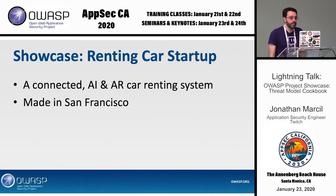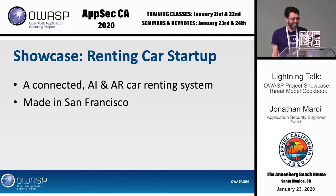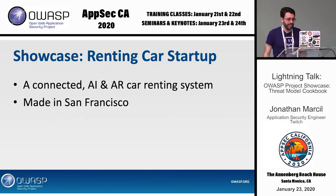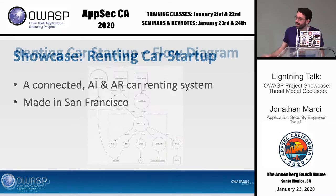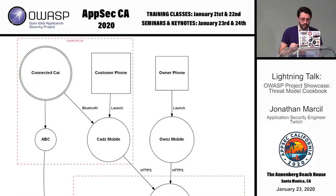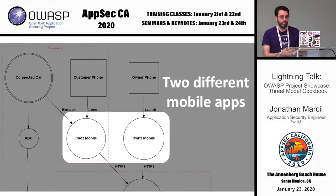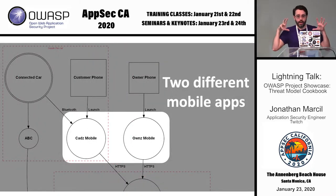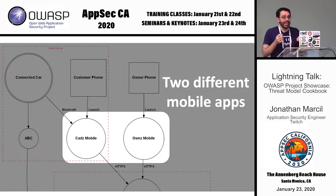Another workshop we did was the Renting Car Startup. This one was made in San Francisco. It's a connected AI-AR car renting system slash startup — you can tell it's from San Francisco because of the buzzwords. The flow diagram looks a bit better because it's not hand-drawn. If you zoom in, you'll see the same type of components, but this one clearly indicates that we have two mobile apps, giving you an understanding of the big picture.